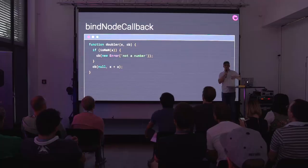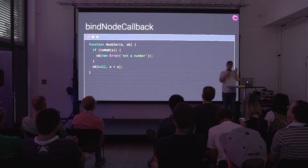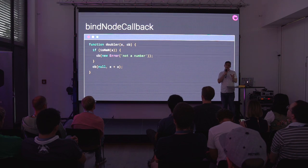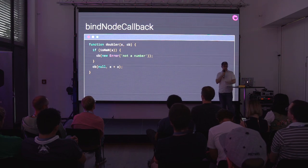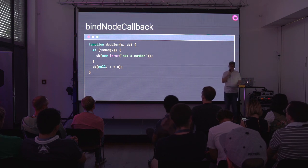A Node callback is this idea where you've got a function that takes a few arguments and the last argument is some sort of callback. The callback always has as its first argument an error — if there is an error — or null if there's not. The next argument is the actual result, or there might be more than one result argument.